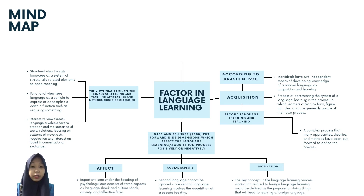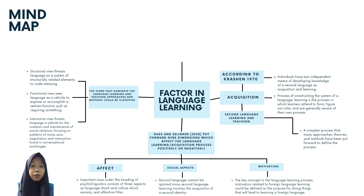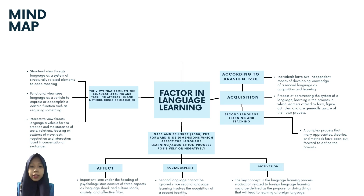The affective filter refers to invisible psychological filters that can facilitate or hinder language production in the second language. The social aspect cannot be ignored since second language learning involves the acquisition of a second identity. In this process, social distance may occur in the connective and affective proximity of two cultures that come into contrast within an individual. The notion of age difference is another dimension discussed under the heading of psycholinguistics, and it is possible to gather different views and studies about the influence of age on the language learning process.